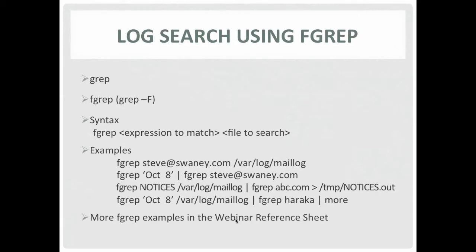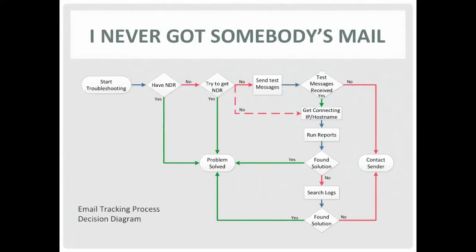There are more FGREP examples in the webinar reference sheet. It's not a complicated command to use the way we need it — just for looking up text strings. And finally we get to the fun part: what I've tried to create is a diagram that will lead you through the steps you need to solve email delivery problems. We'll look at two of these diagrams because the steps are different if you're tracking a mail-from or a mail-to problem.